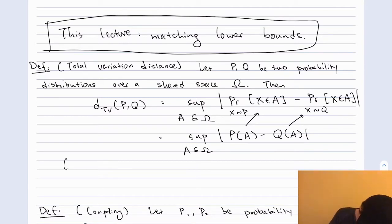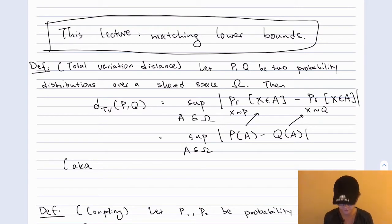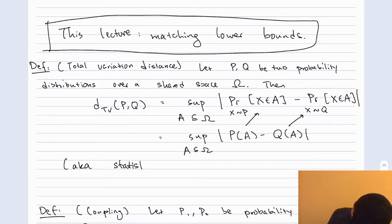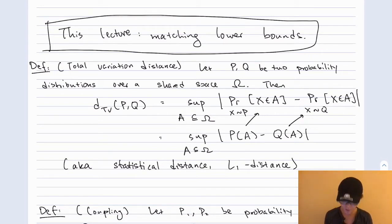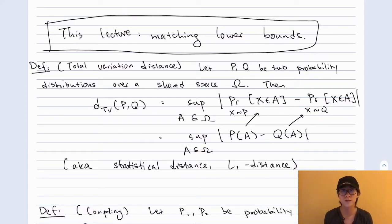In the literature, this is also known by several other names, as it is a very well-studied measure of distance. You also see this referred to as statistical distance or L1 distance, for reasons that will become clear shortly. In this lecture, we will relate this notion of distance to learning with outliers. To do so, we need to introduce one additional statistical notion: coupling.